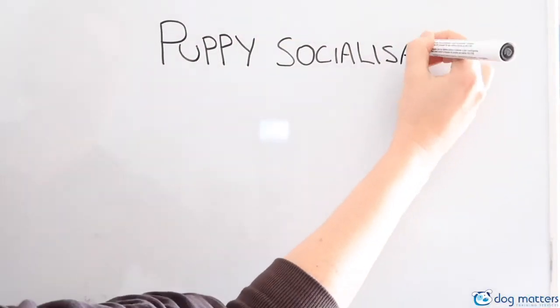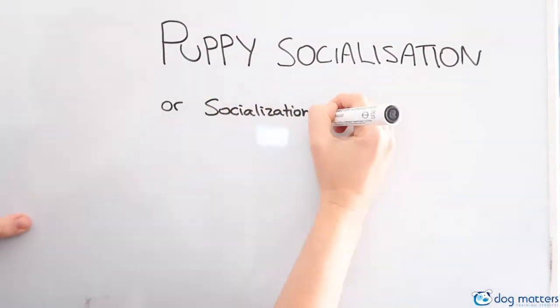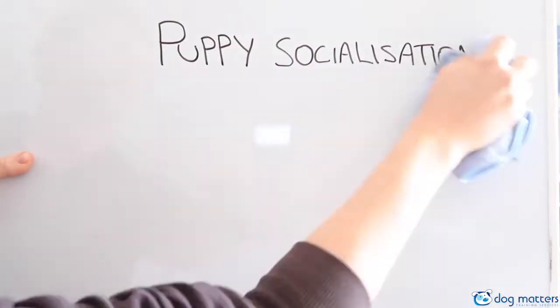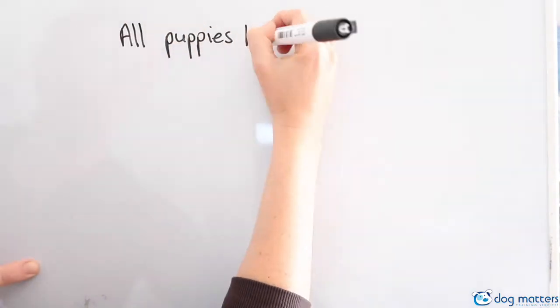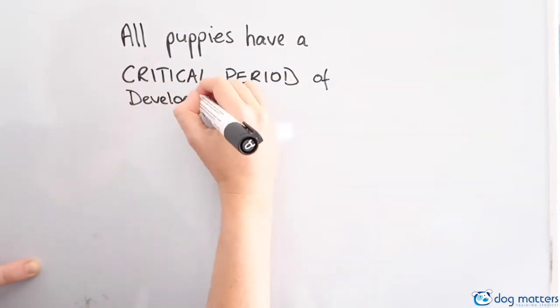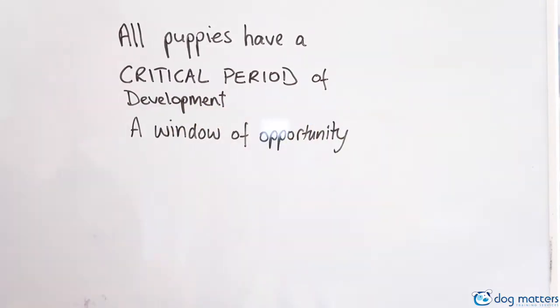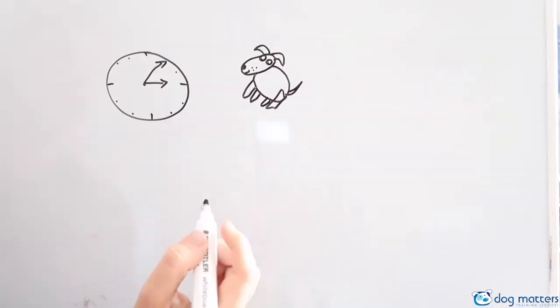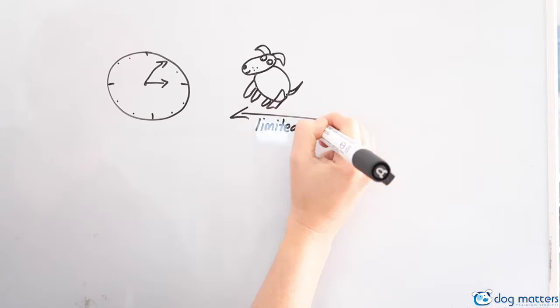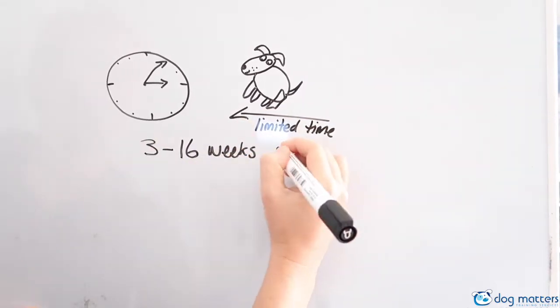Today we're talking about puppy socialization, or spelled with a Z if you're in America. All puppies have a critical period of development, which is a window of opportunity. All puppies have this limited window of time which lasts from 3 to 16 weeks of age, depending on the puppy.